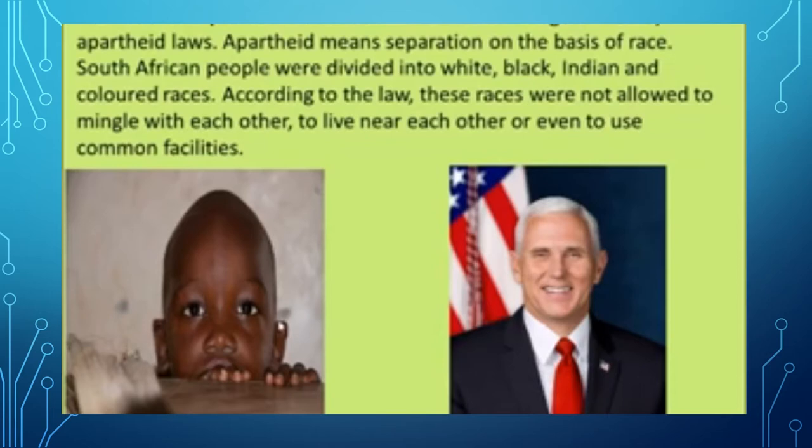In South Africa, the majority black population was under the rule of white people. The Europeans in power came up with the system of apartheid — a system of racial segregation — so that they could control the economic and social systems of the country. This policy of racial segregation denied non-European groups any rights and privileges.